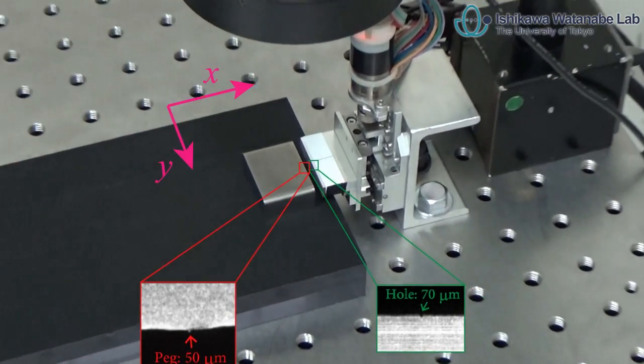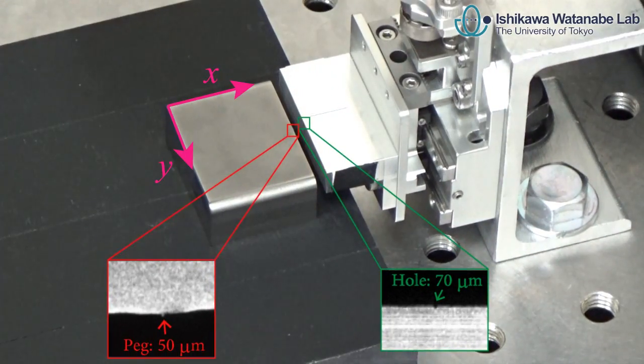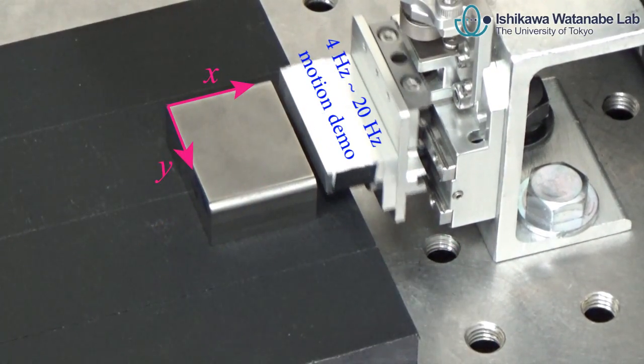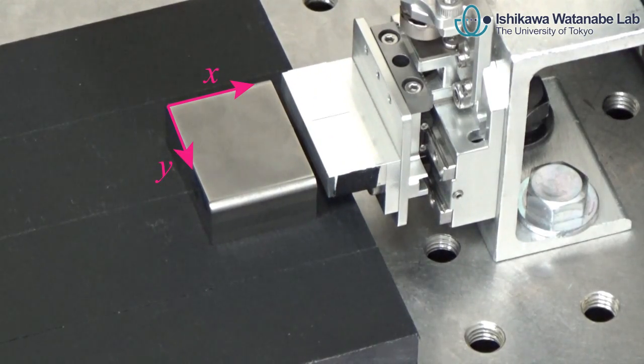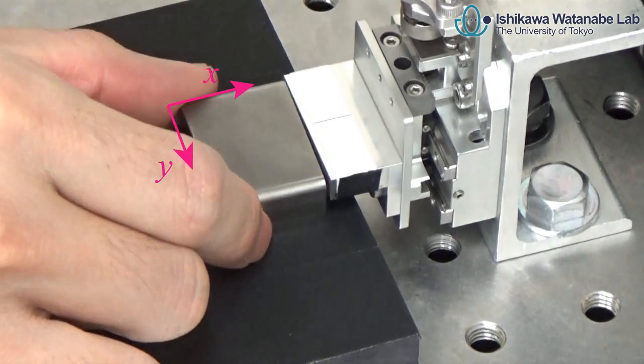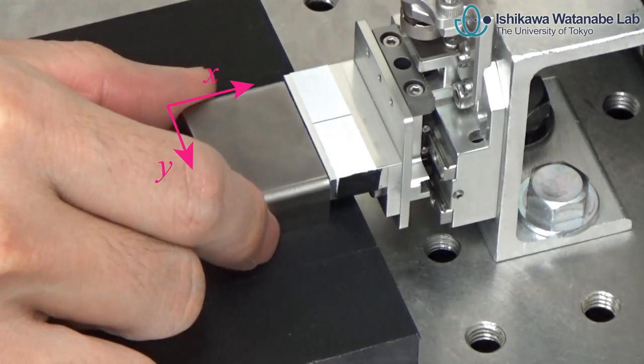In this peg-and-hole task with a clearance of only 10 micrometers, the peg is roughly manipulated by a human in the XY 2D plane. The robotic module drives the hole, precisely aligning it in the Y direction with the peg.